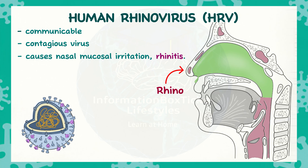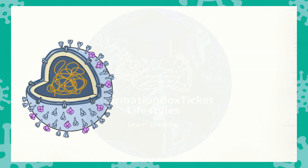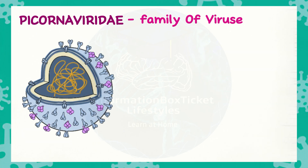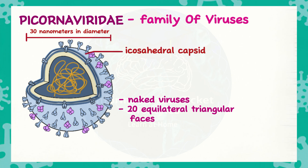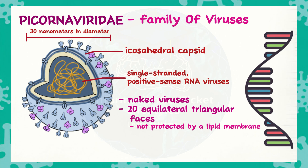There are more than 100 serologic kinds, and all of them can cause the common cold in humans. Rhinovirus is now part of the Picornaviridae virus family. They are naked viruses, roughly 30 nanometers in diameter, and are enveloped by an icosahedral capsid — a spherical protein shell with 20 equilateral triangular faces — and naked because the capsid is not protected by a lipid membrane. They are also single-stranded, positive-sense RNA viruses, meaning their RNA functions as mRNA, which the host cell's ribosomes use to produce viral proteins.